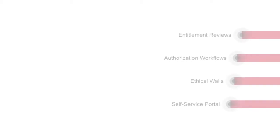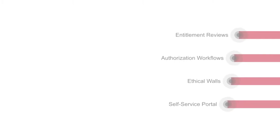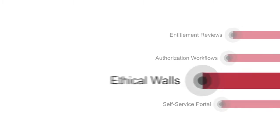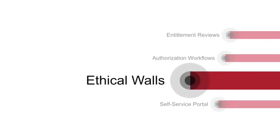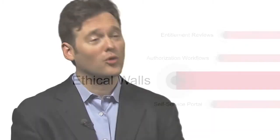The third core piece of functionality in Data Privilege is something that we call ethical walls. With Data Privilege, organizations can set up ethical walls so that two groups that should never have access to the same data set don't.